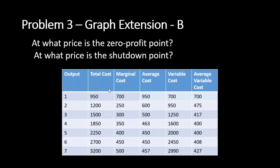Part B of problem three asks: what price is the zero profit point, and what price is the shutdown point? For these, we look at average cost and average variable cost and ask where the marginal cost curve intersects them. For the zero profit point, we look at where marginal cost equals average cost — and we see that is at six units of output, where they're equal at $450.